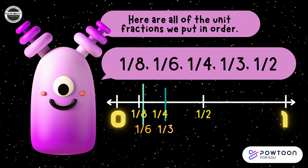Here are all of the unit fractions we put in order: one eighth, one sixth, one fourth, one third, one half. Look at the number line to see where they are placed. Now pause the video and discuss with your partner why the denominator on the smaller fractions is a larger number than the denominator on the bigger unit fractions.